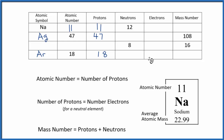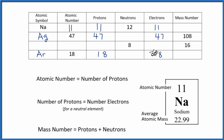Let's fill that information in. We have 11 protons, so 11 electrons. 47 protons, so 47 electrons. We have 18 protons, so we have 18 electrons. Just remember, if there's nothing written after it — like a plus or a minus — it's a neutral element, and the electrons and protons are equal.